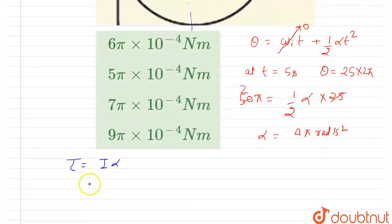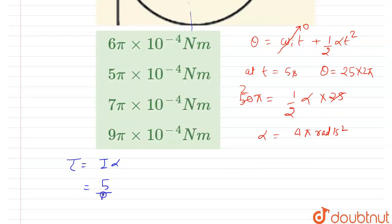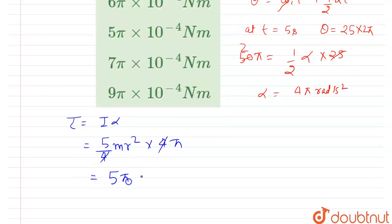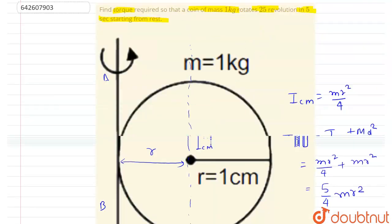get cancelled out, so we'll get 5π mr squared, right? So you can put the value of m and r here. m is 1 and r is 1 centimeter, right? So I will divide it by 100, so I